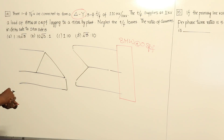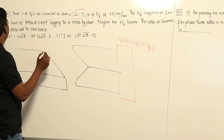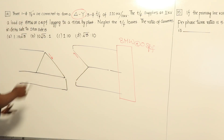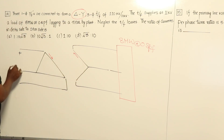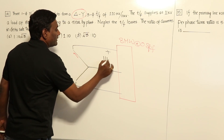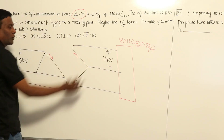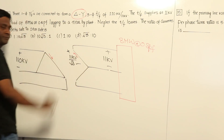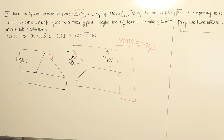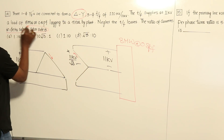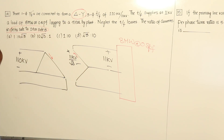Neglecting transformer losses, we need to find the ratio of currents in the delta side to the star side. The input voltage is 110 kV and the output voltage is 11 kV. Since the output side is star connected, the per-phase voltage is 11 kV divided by root 3. The question asks for the ratio of currents in the delta side to the star side.